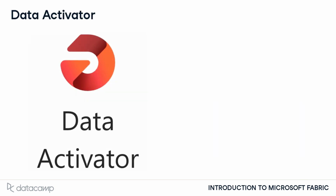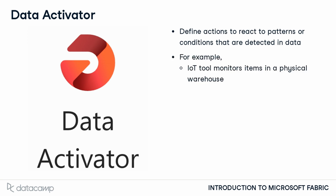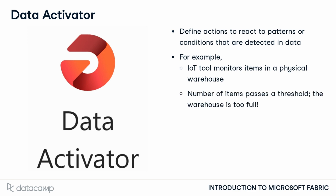Finally, we'll look at the Data Activator experience. This experience lets users define actions to take when certain patterns or conditions are detected in data. It can connect to Power BI reports or event streams. For example, if you're collecting data from sensors monitoring the number of items in a warehouse, when the item count passes a certain threshold, an event could be triggered to send an email to the manager. These events and triggers are configured using the Reflex tool within Data Activator.